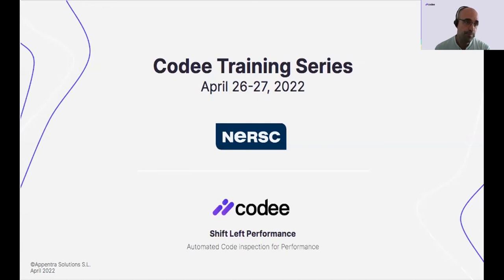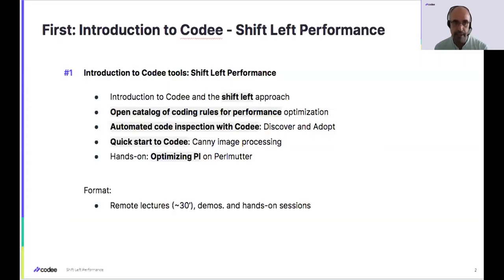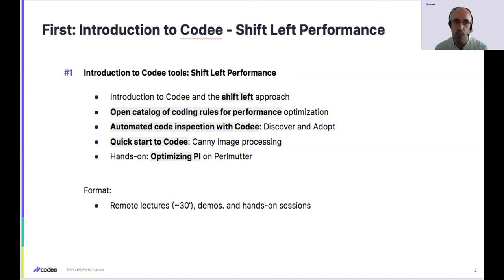We have organized this session into four parts. Today, we will be covering parts one and two — we have three hours ahead and plan a 30-minute break in the middle. We will start with part one, basically introducing the Kodi tools and what makes them different. You can summarize most of the capabilities available in Kodi with three words: shift left performance. We will explore what shift left means and how Kodi enables it for the first time.